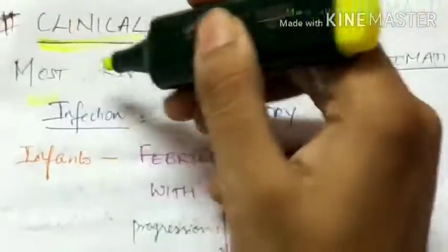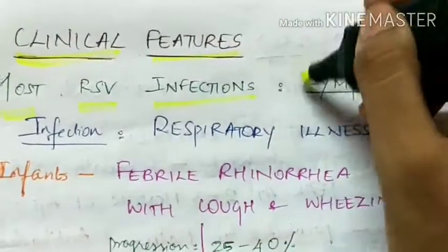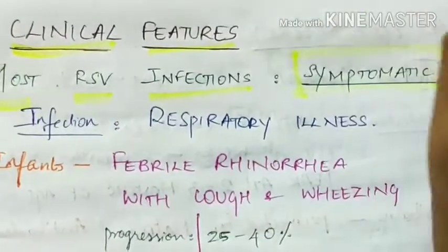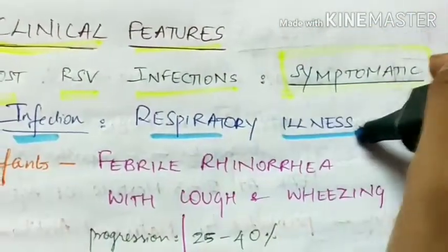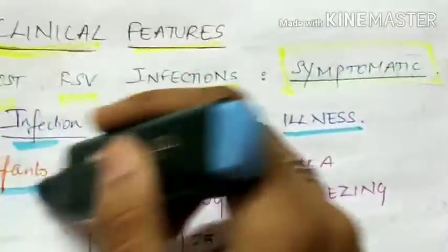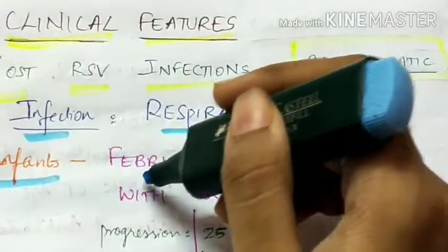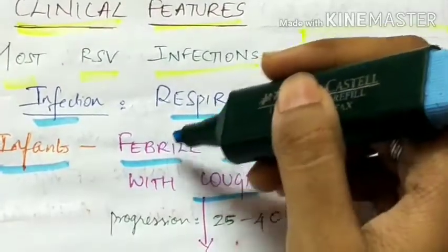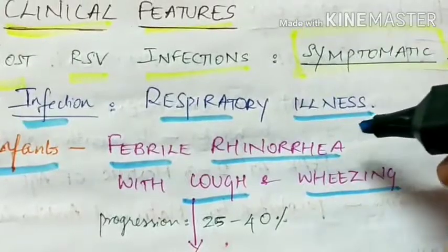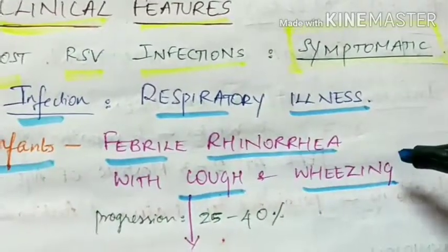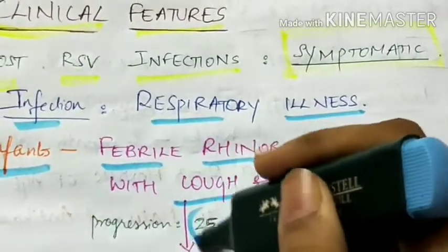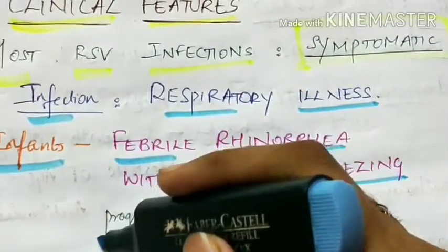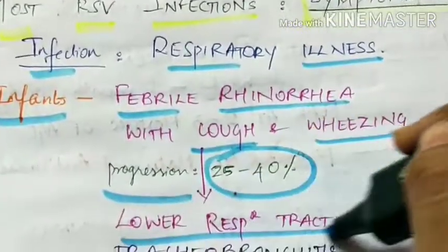Coming to the clinical features: most RSV infections are symptomatic and cause respiratory illness. In infants, it manifests as febrile rhinorrhea with cough and wheezing — febrile because there is fever, and rhinorrhea is cold with cough and wheezing. In 25 to 40 percent of cases, the disease progresses to lower respiratory tract involvement.